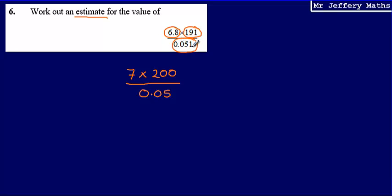And then 0.051, how could I represent this using only one digit that's not a zero? That would be 0.05. So just to clarify what's happened there, all that I then need to do is make the calculation now. Now, 7 times 200, I'm going to do this part first, that's going to give me 1,400. And I'm dividing this by 0.05.